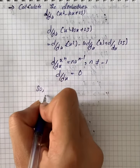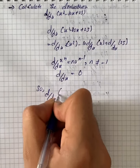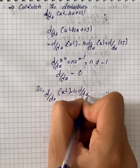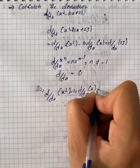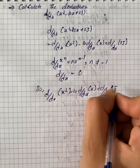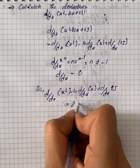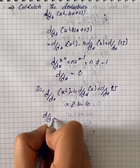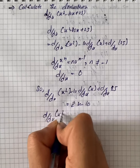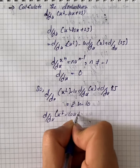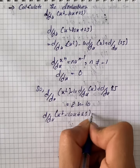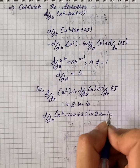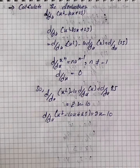Applying the rules: d/dx of x² minus 10 times d/dx of x plus d/dx of 25 equals 2x minus 10. So d/dx of (x² - 10x + 25) is equal to 2x minus 10. That is the solution for the given question.